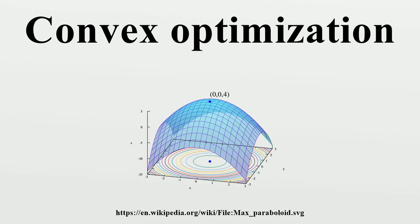Convex minimization, a subfield of optimization, studies the problem of minimizing convex functions over convex sets. The convexity property can make optimization easier than the general case. For example, any local minimum must be a global minimum.